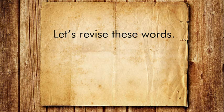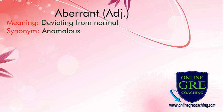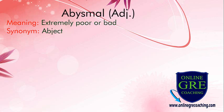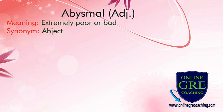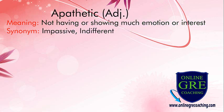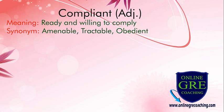Let's revise these words once again. Aberrant: deviating from normal; synonym is anomalous. Abysmal: extremely poor or bad; synonym is abject. Adamant: not willing to change an opinion or decision; synonyms are obdurate, stubborn and obstinate. Apathetic: not having or showing much emotion or interest; synonyms are impassive and indifferent. Compliant: ready and willing to comply; synonyms are amenable, tractable and obedient.